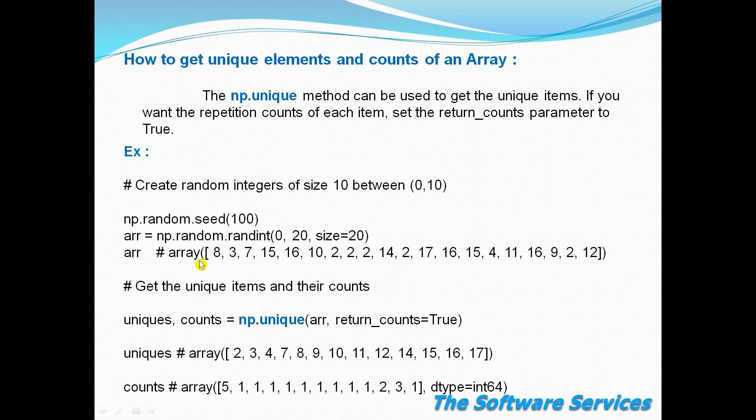scan the array and find the unique elements like 8, 3, 7, 15, 16, 10, 2. No matter how many times the number 2 appears, it will take 2 as unique - only one 2. Like that, it will take all unique items and store